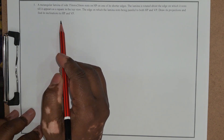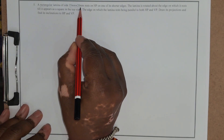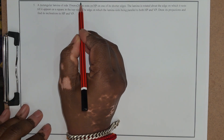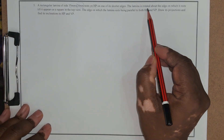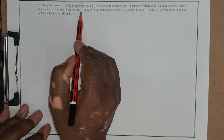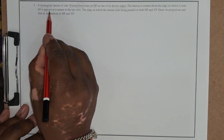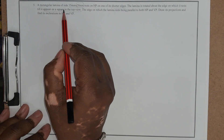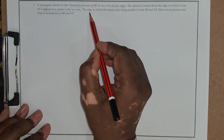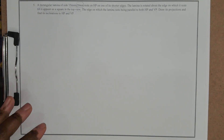Let us look at the criteria to be satisfied. The first criteria is the shape: a rectangular lamina of sides 35 mm by 20 mm resting on HP, specifically on one of its shorter edges, which is the 20 mm edge. The angle of inclination to HP is not directly provided; instead, what is given is that the top view appears as a square. Finally, the edge on which it rests is parallel to both HP and VP.